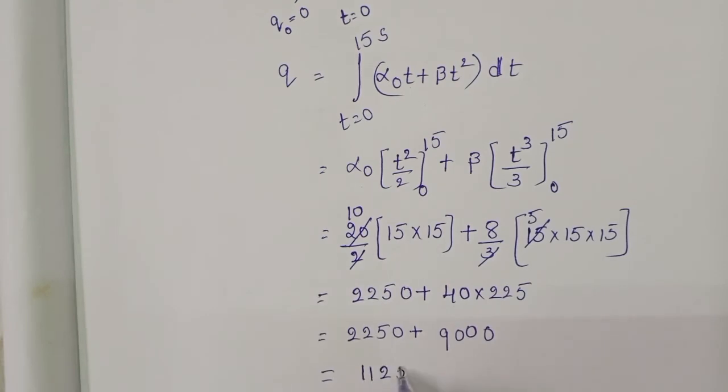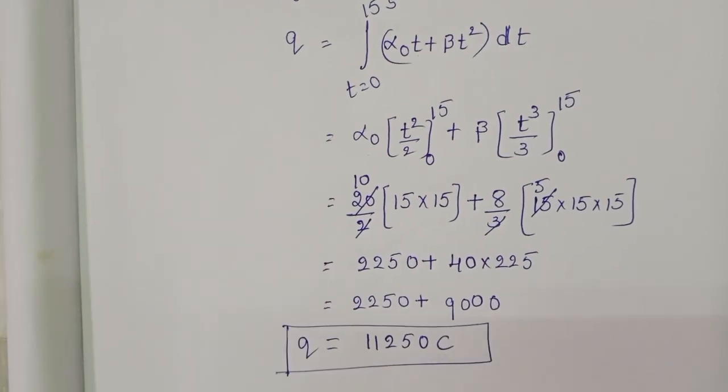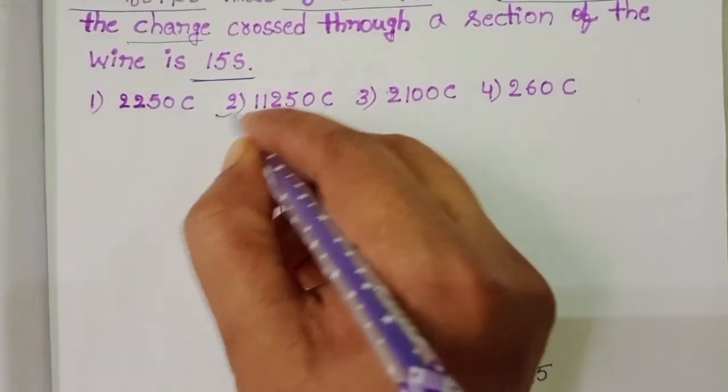11,250 coulombs. Q equals 11,250 coulombs. Second option is correct.